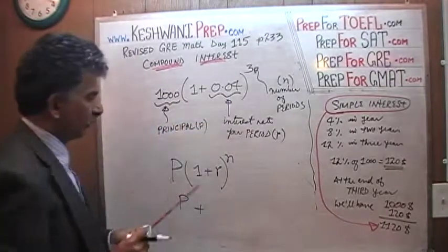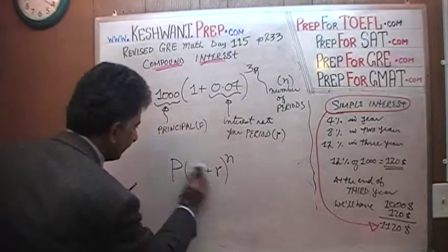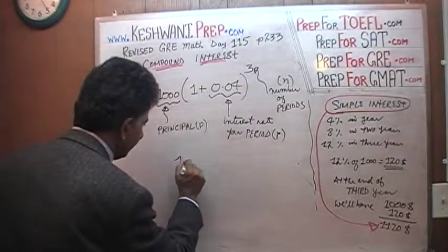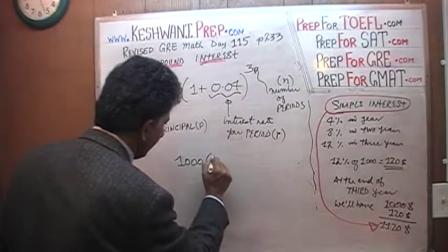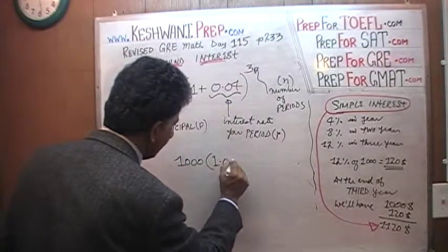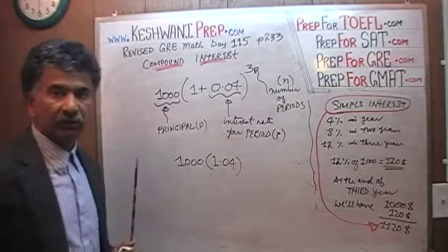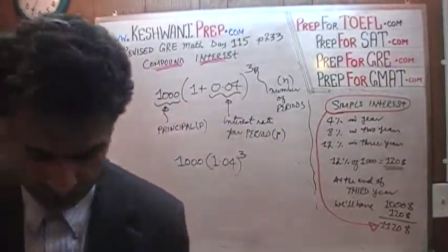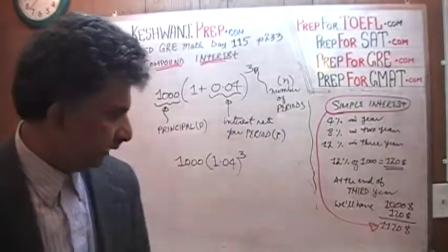So, let's apply this formula and see what answer we get. Take out your calculator and do it out. 1,000 times 1.04 because 1 plus .04 is 1.04 raised to the third power. Let's see what it gives you. You do it and I'll do it with the calculator and see what we come up with.